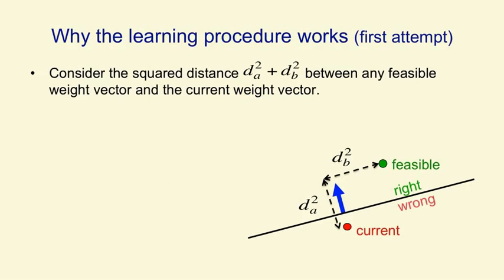We're going to use our geometric understanding of what's happening in weight space as a perceptron learns to get a proof that the perceptron will eventually find a weight vector that gets the right answer for all of the training cases, if any such vector exists. Our proof is going to assume that there is a vector that gets the right answer for all training cases — we'll call that a feasible vector. An example of a feasible vector is shown by the green dot in the diagram.